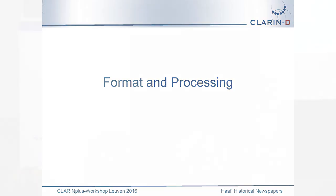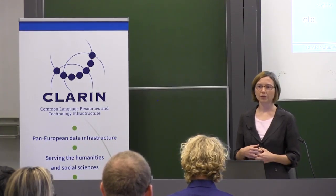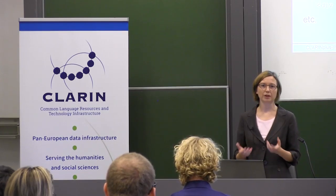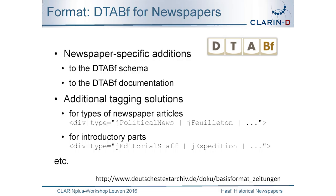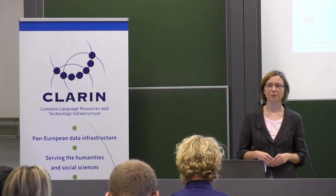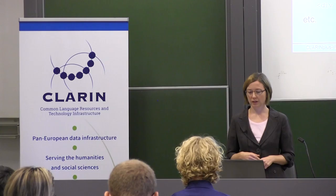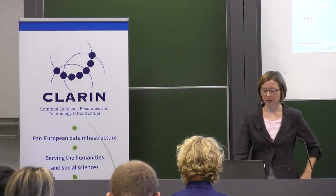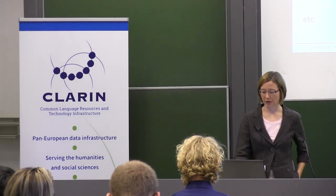Regarding the format, we have our TEI format and we enhanced it for newspapers, providing documentation about how to annotate newspapers. Some additional tagging solutions we applied were values for divisions for article types like political news and feuilleton. Introductory parts are somewhat individual for newspapers rather than other books, so we made some adjustments to the format. Now we are trying to annotate other newspapers in a similar way according to that format.